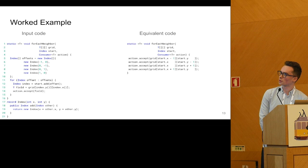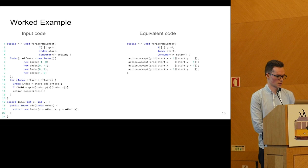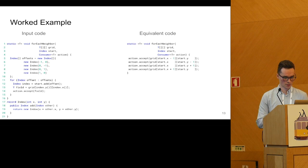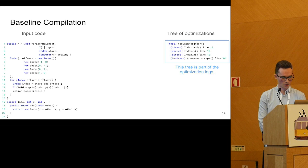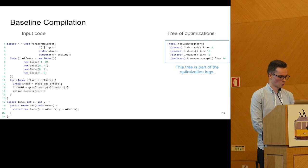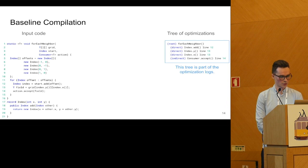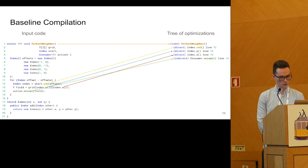This workload should be pretty much equivalent to the code that you can see on the right. The code on the left allocates some objects, there's a for loop and there are some method calls. The code on the right doesn't use this. So the compiler should be able to optimize these allocations, method calls, and the for loop away. This is how we record the optimizations: at the beginning of the compilation, we build a tree that reflects the compilation unit we're compiling and all the calls in the method.